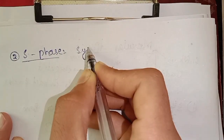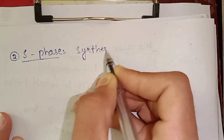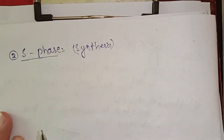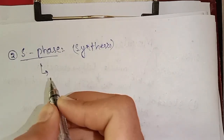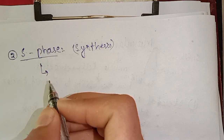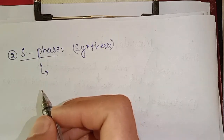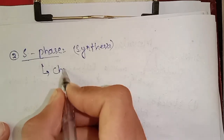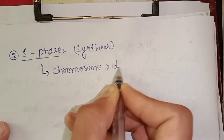The S phase is also called the synthesis phase. In this phase, the cell duplicates its chromosomes — that is, DNA replication occurs and each chromosome is duplicated.